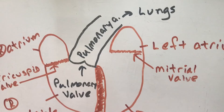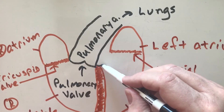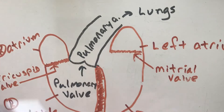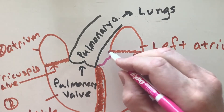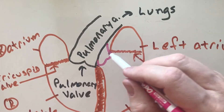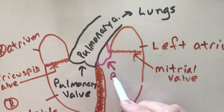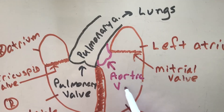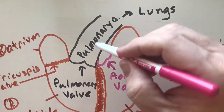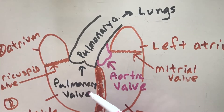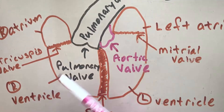Over on this side I'm going to have another valve — I'll use pink — and then I'm going to have an artery here. This valve is called my aortic valve. The aortic valve is going to be between the left ventricle and the aorta. The pulmonary valve is going to be between the right ventricle and the pulmonary artery.